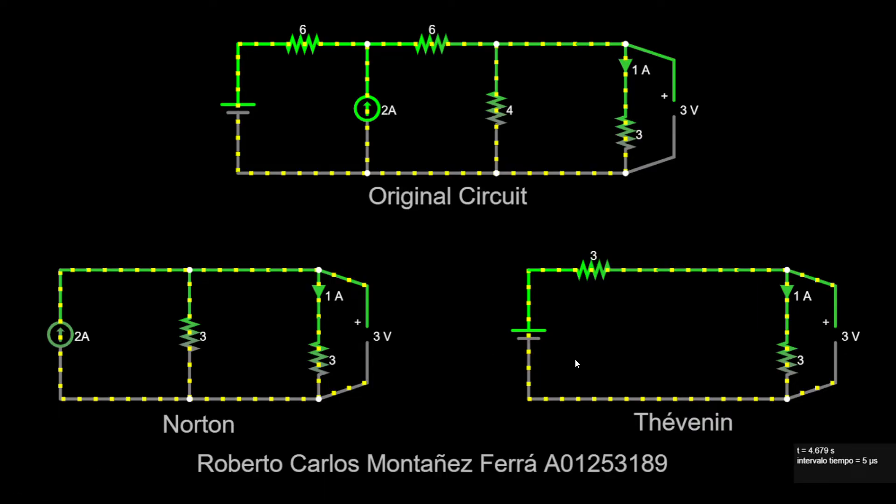Then we used Falstat to calculate that we have the same amperes and the same voltage in all three circuits. We have on the top the original circuit, and we have 1 ampere and 3 volts. Then we have our Norton and Thevenin circuit that also have 1 ampere and 3 volts, so it's correct, they are equivalent.